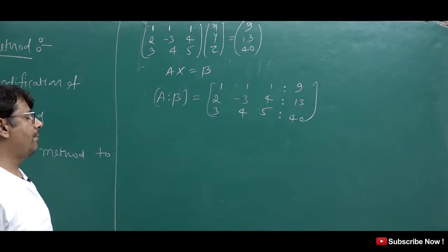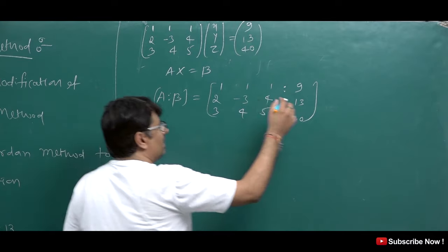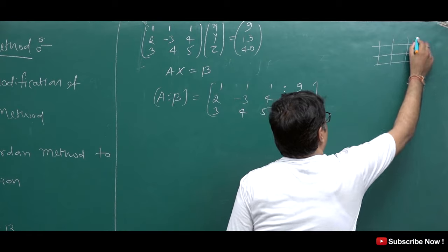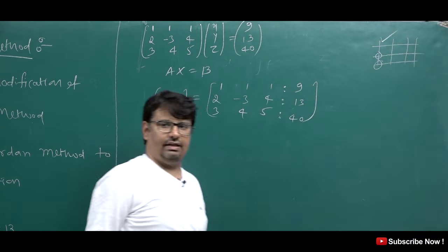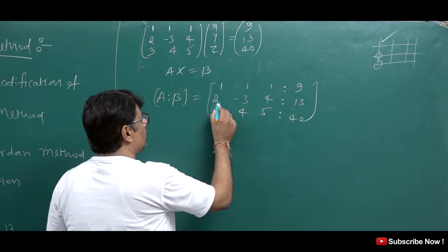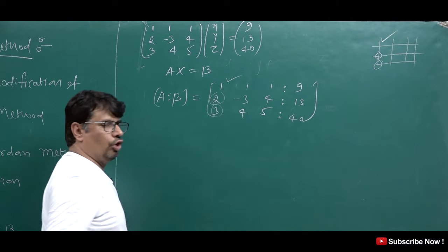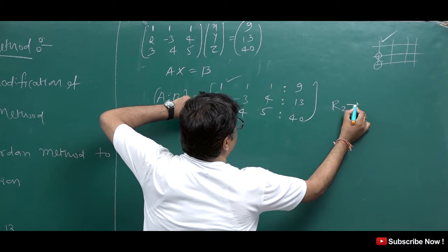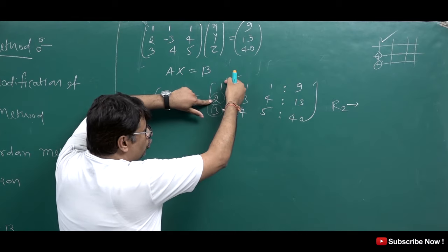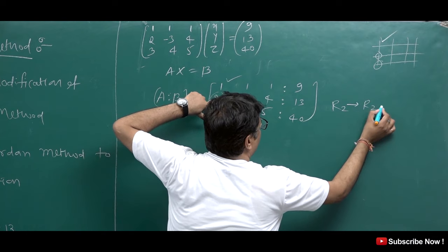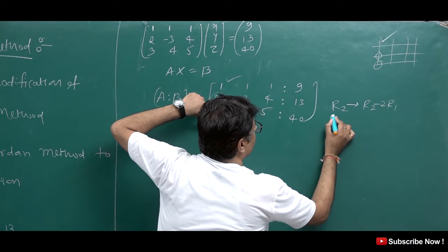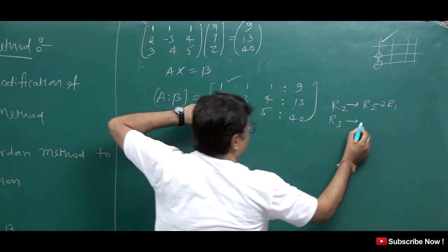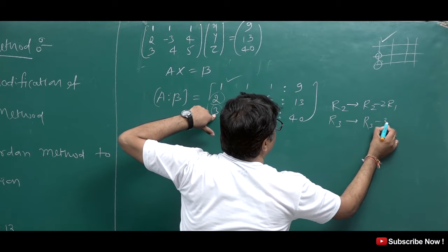The first step is to make the elements below the first pivot element zero. We will use the element in position (1,1) to eliminate below it. So we apply: R2 becomes R2 minus 2R1, and R3 becomes R3 minus 3R1.